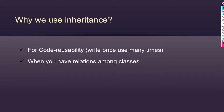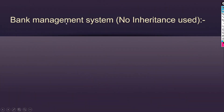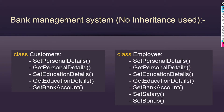The second reason is when you have relations among classes. Consider I am creating a bank management system using object-oriented programming, without using inheritance. A bank management system may have many classes — let's consider two classes: customers and employees.